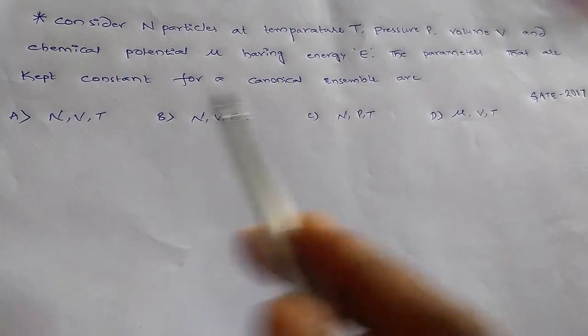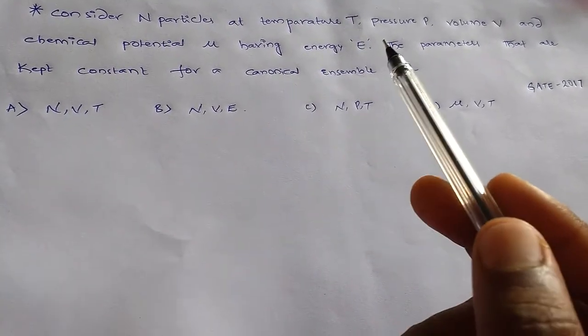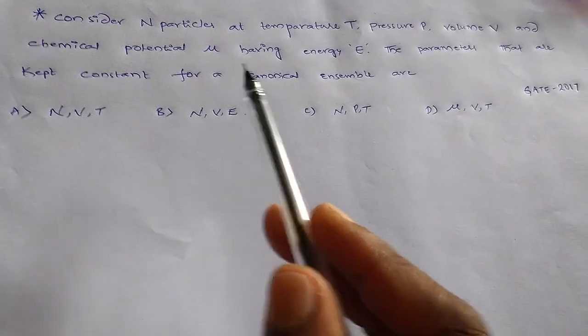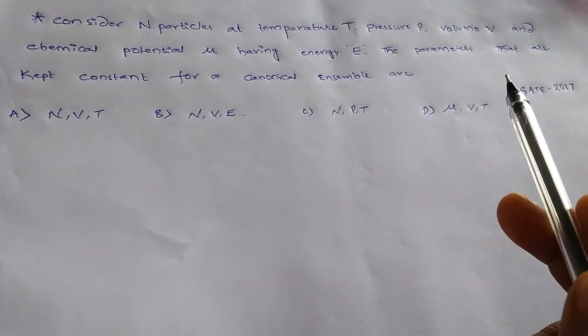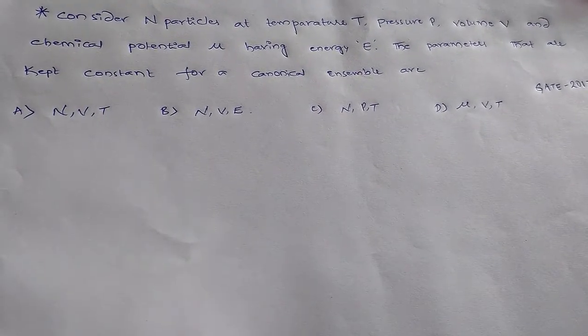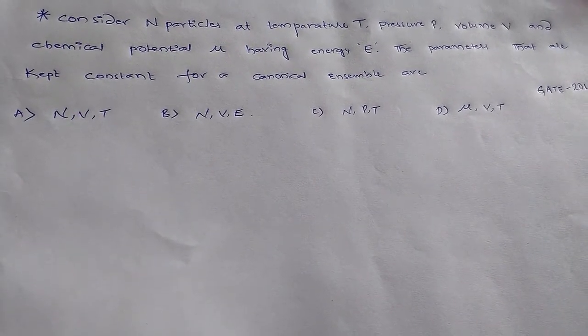The question is: consider n particles at temperature T, pressure P, volume V, and chemical potential μ having energy E. The parameters that are kept constant for a canonical ensemble are. So we have four options.